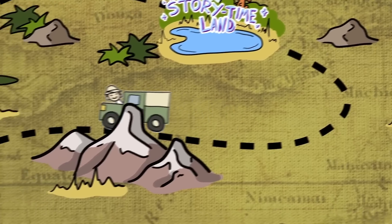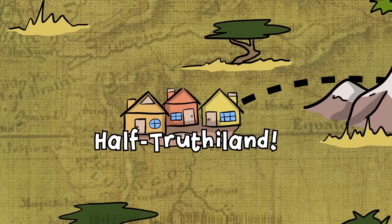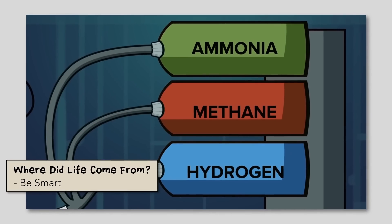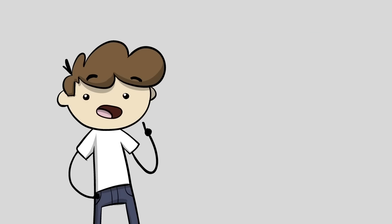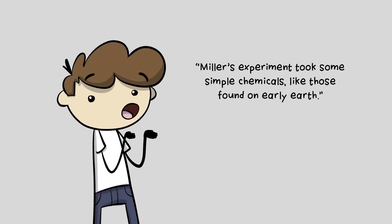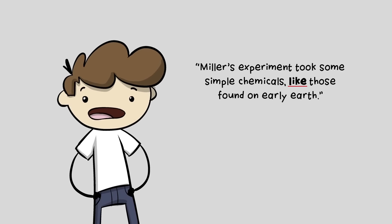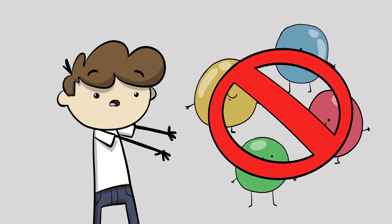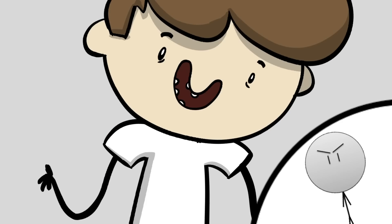The next place on our tour of science videos is Half-Truth-O-Land — technically true, but also misleading. Miller's experiment took some simple chemicals like those found on early earth. Did you catch it? 'Like those found on early earth.' The word 'like' here is meant to mean 'such as' — an inclusive usage. Of course, Miller tried to simulate early earth based on what scientists thought at the time. We now know the atmosphere was a bit different than what Miller had imagined. That being said, it doesn't mean the chemicals were necessarily incorrect, but rather that the proportions might have been slightly inaccurate.